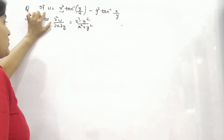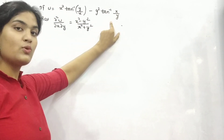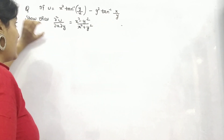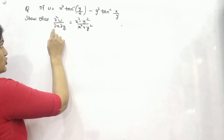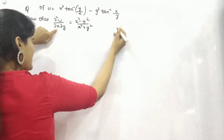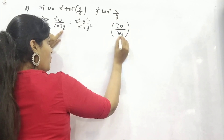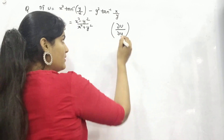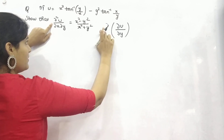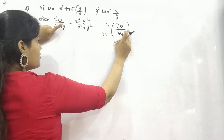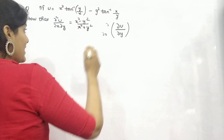Here you are given u = x² tan⁻¹(y/x) − y² tan⁻¹(x/y). You have to show this. We need to find the partial differentiation of u with respect to y first, then once we differentiate with respect to x, we get the second mixed partial derivative ∂²u/∂x∂y.